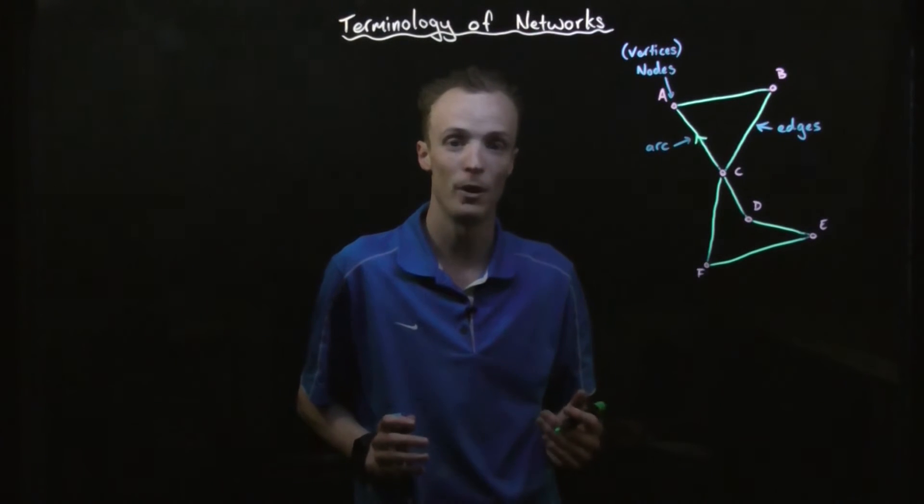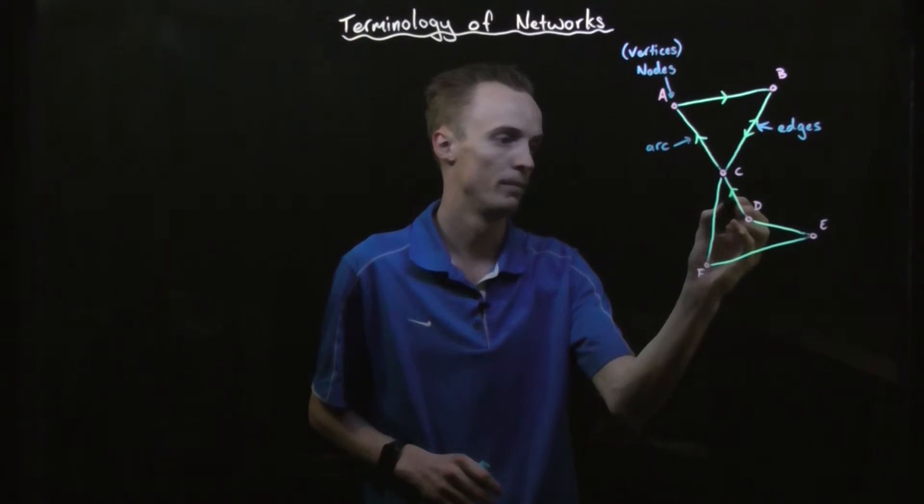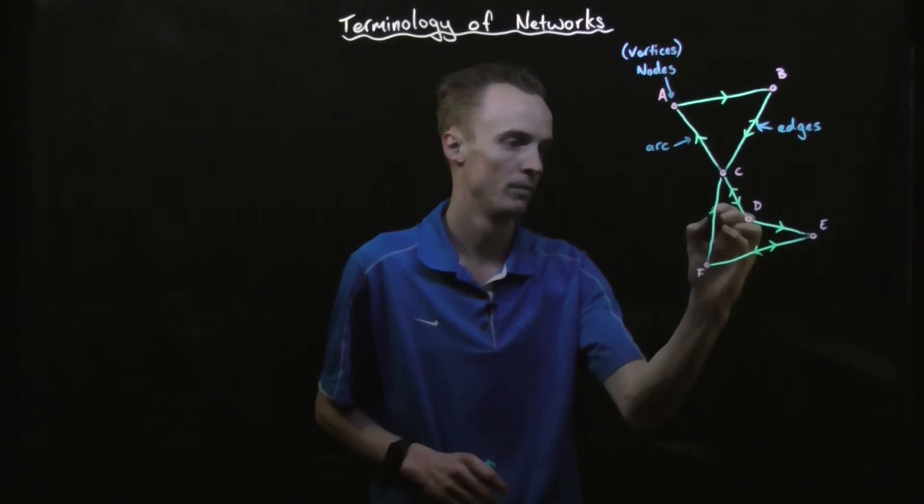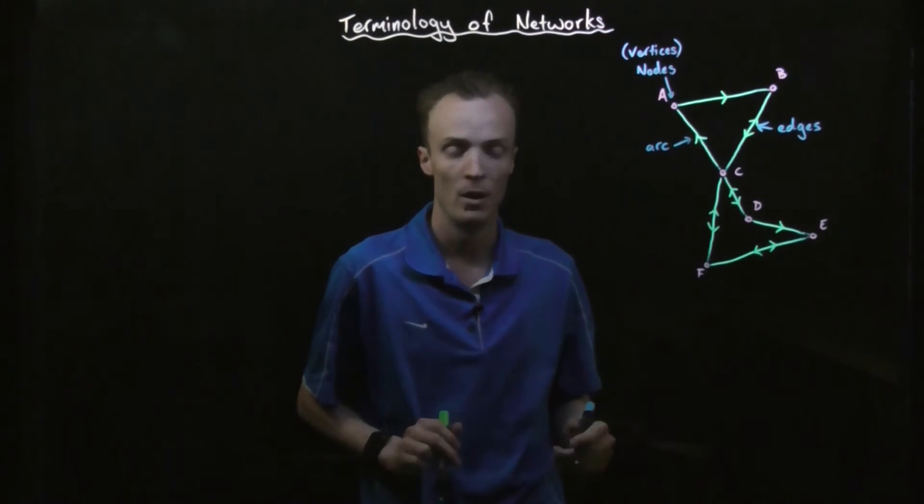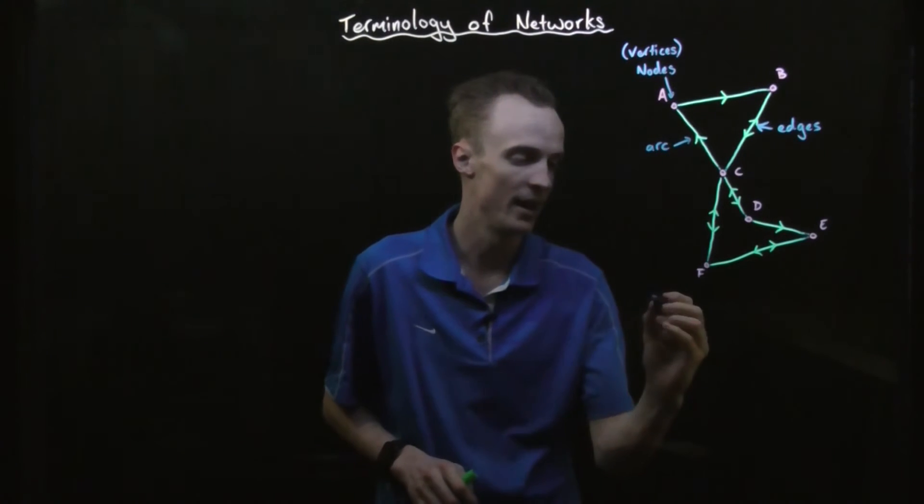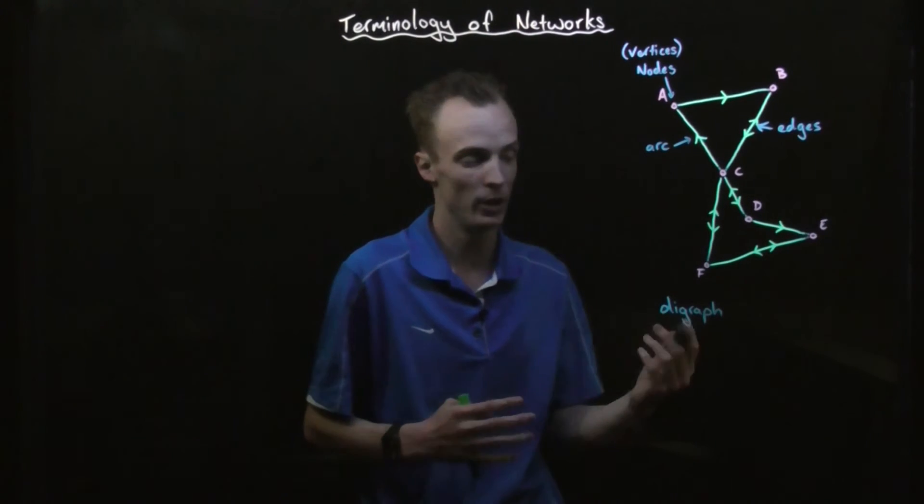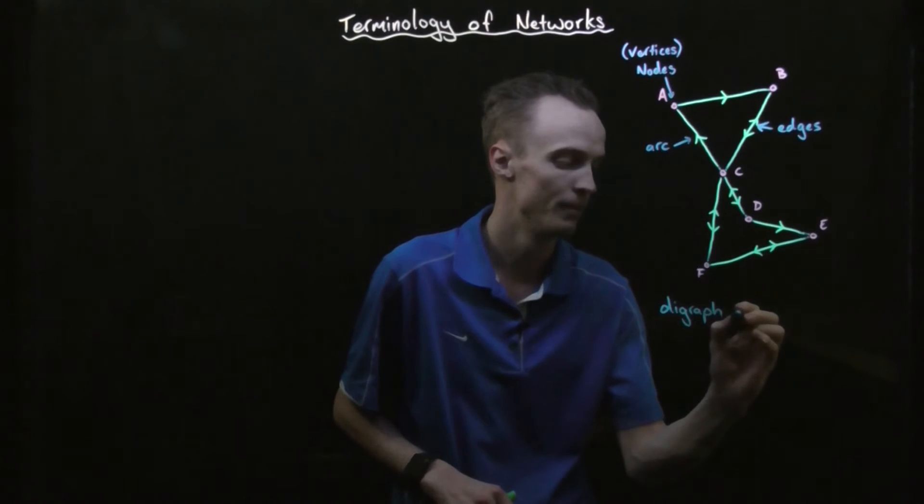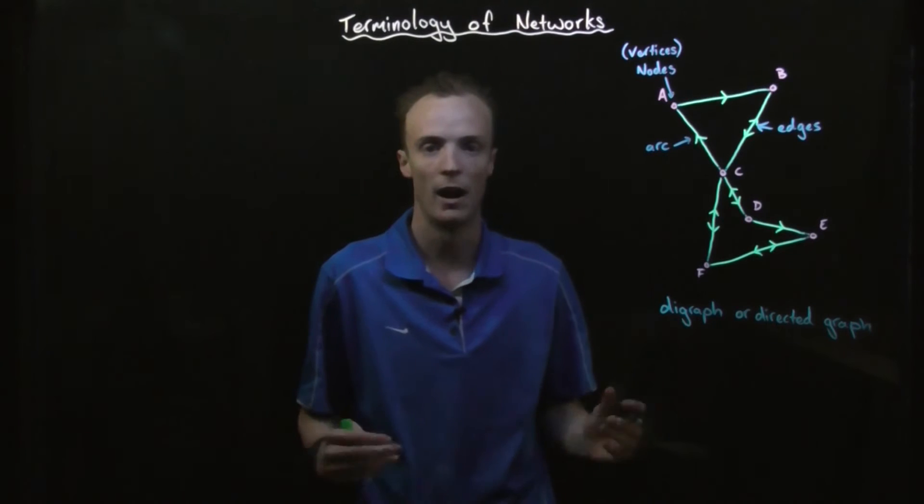Now if we have a full network of arcs such as this, we give this specific type of network a special name. We call this type of network a diagraph, which we can also refer to as a directed graph.